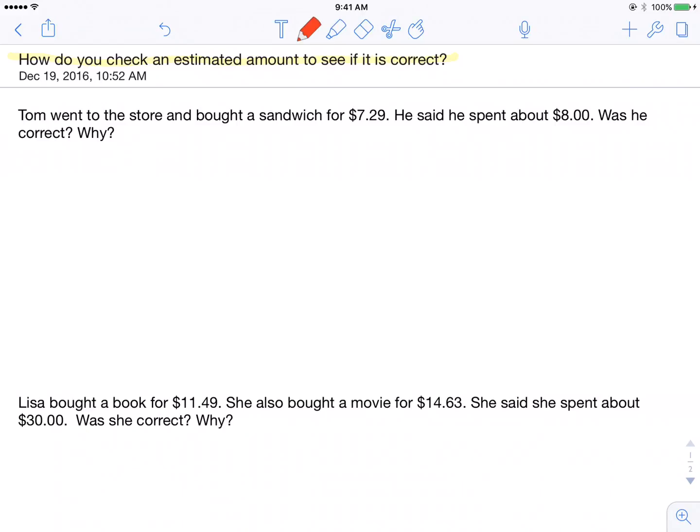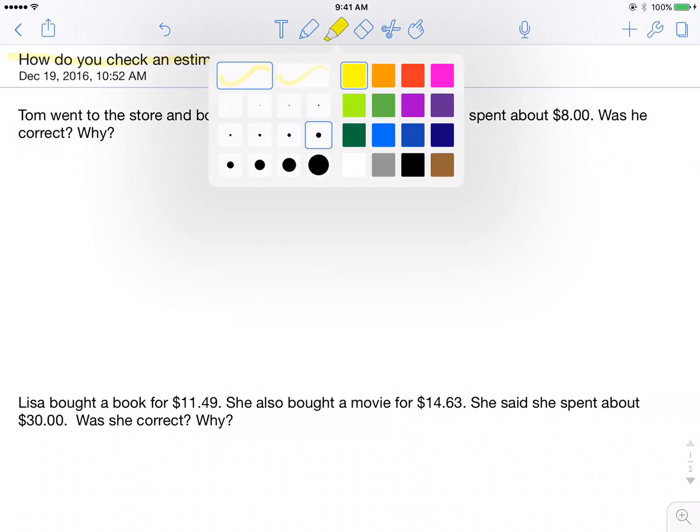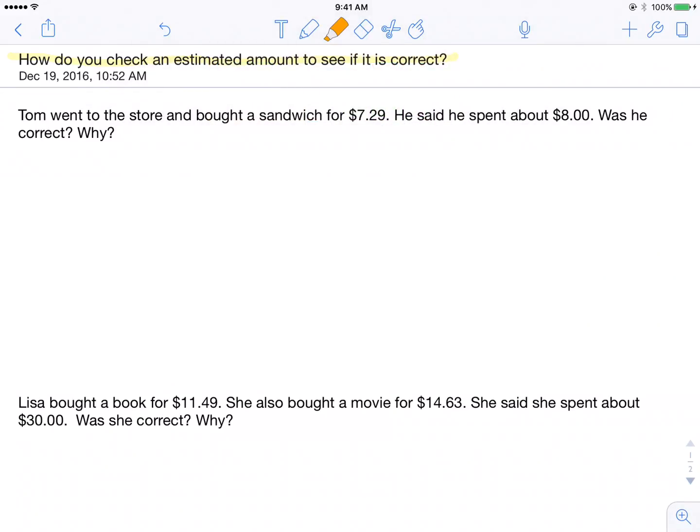So here's what we're talking about. First of all, we're working with word problems. So I'm going to work with this first word problem right here. Tom went to the store and bought a sandwich for $7.29. He said he spent about $8. Was he correct? Why?